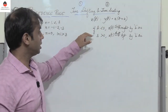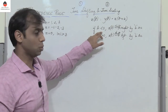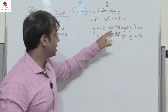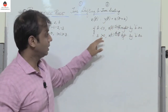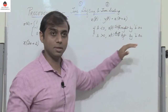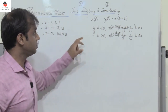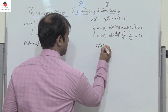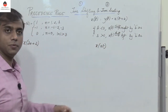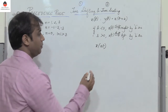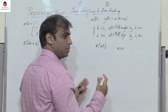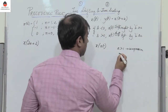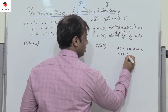For time shifting, if the value of b is less than 0, then the entire signal x of t gets shifted to the right by b seconds. And if the value of b is greater than 0, then the entire signal gets shifted left by b seconds. For time scaling, if I have signal x of a·t, the signal is time scaled by factor a. If a is greater than 1, the signal gets compressed by factor a. And if the value of a is less than 1, there is expansion.